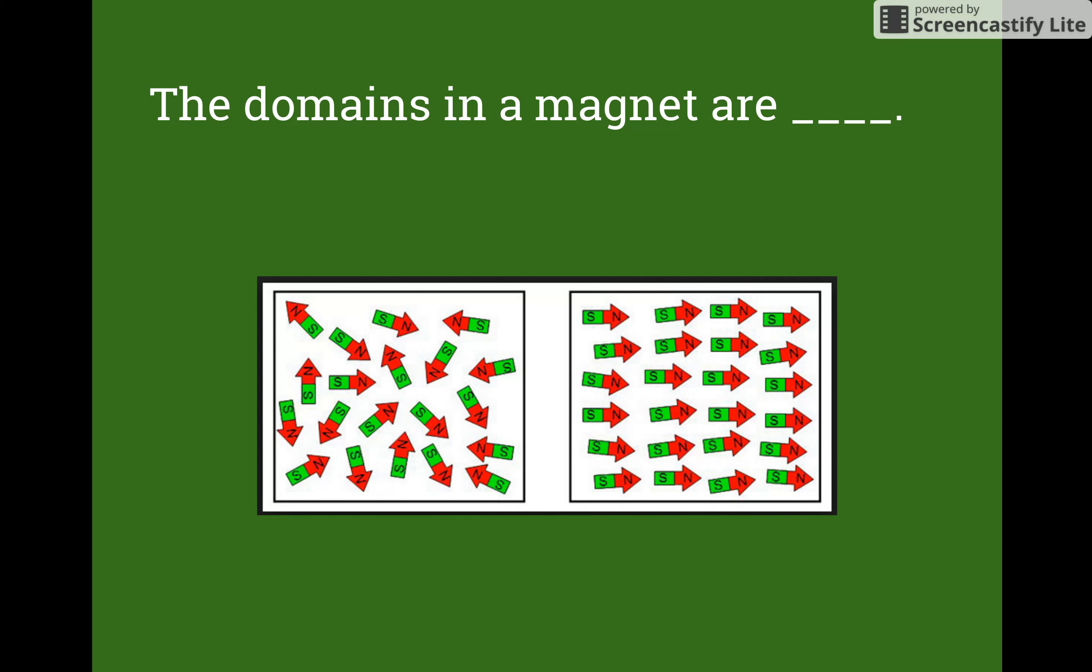The domains in a magnet are aligned, and you can see in the diagram on the left side this would not be magnetic because the domains are not aligned, but on the right side they're all pointing the same directions so this object would be magnetic.